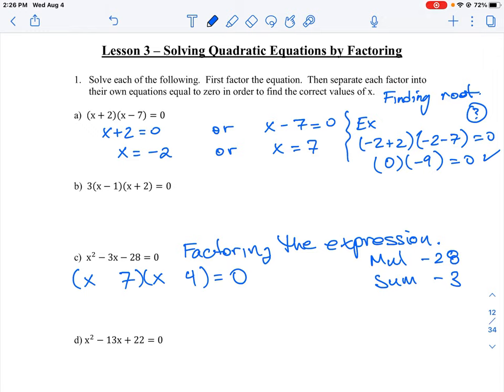Now we need a negative 28. So that means one of these numbers is going to have to be negative. But we also want to have a difference of three. So we do know that if we tried this out, if we put minus seven and plus four, negative seven times plus four is negative 28. And then negative seven x plus four x will give us negative three x. So that's the factored expression that works.